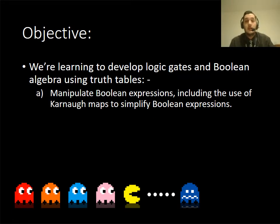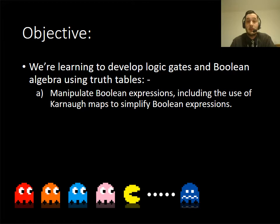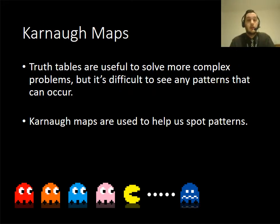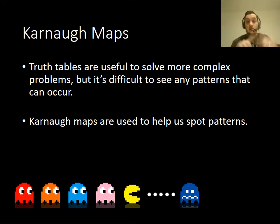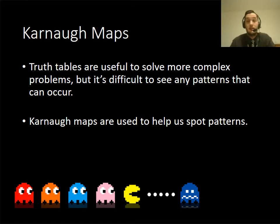Previously we looked at doing some simple logic gates, and in the lesson I would have given you some worksheets getting you to join some of the gates together. What we need to do is actually manipulate expressions and simplify them. Karnaugh maps are a way of solving more complex problems — you can look at the map and spot where the ones and zeros occur, whereas using truth tables it's quite hard to spot the pattern in the gate.